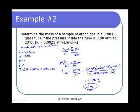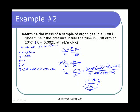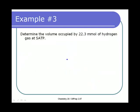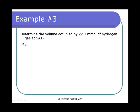The biggest trick with the ideal gas law is just making sure you do your algebra right. Here's another example: determine the volume of hydrogen gas if we have 22.3 millimoles of hydrogen gas at SATP. Again, only one set of conditions, so we use PV = nRT. We have pressure, number of moles, R, and temperature, so we're solving for volume.